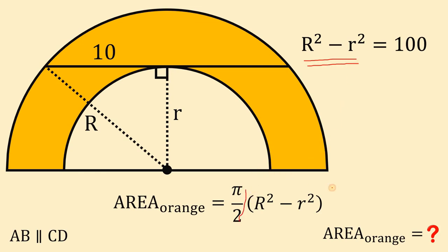This is what we want, because the area of the orange region equals π over 2 multiplied by capital R squared minus small r squared, which is simply equivalent to 100. We can replace this by 100.